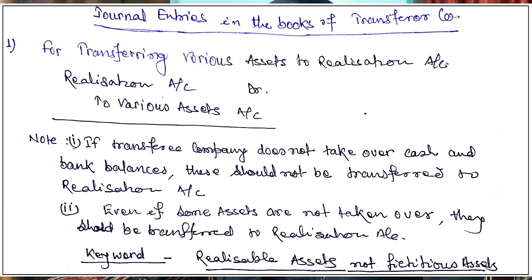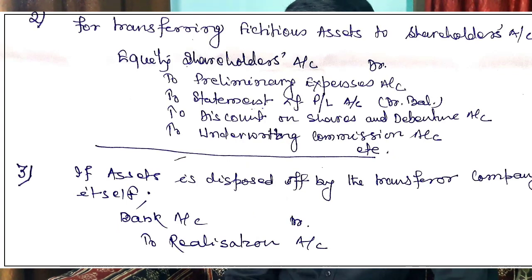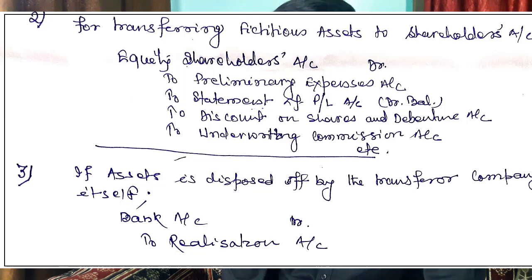For fictitious assets, journal entry number two is for transferring fictitious assets to Shareholders Account: Equity Shareholders Account debit, to Preliminary Expenses Account, to Statement of P&L Account, to Discount on Shares/Debentures Account, to Underwriting Commission Account.